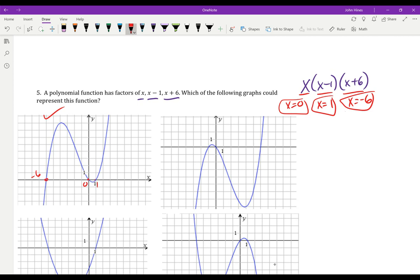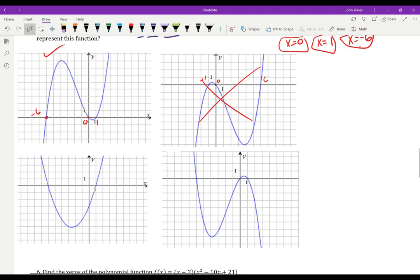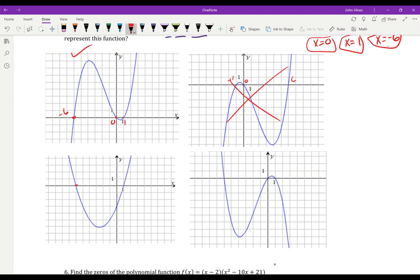What do we have here? Negative 1, 0, and 6. That's no good. I want 0, 1, and negative 6. This is a parabola. This only crosses through twice. This only crosses through twice. It doesn't cross through 0 here. So that's no good.